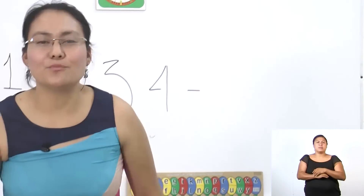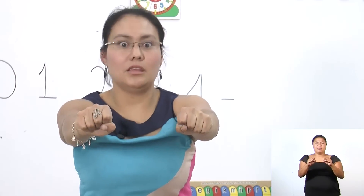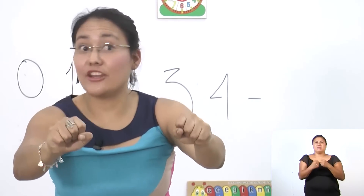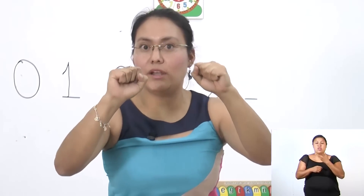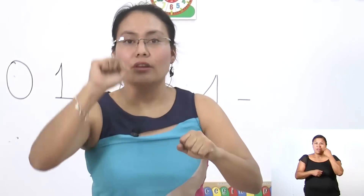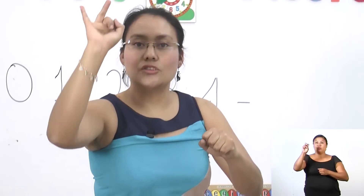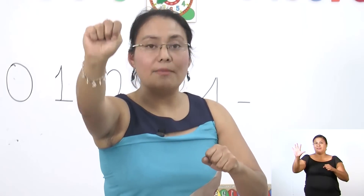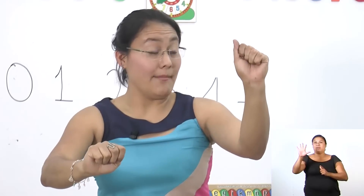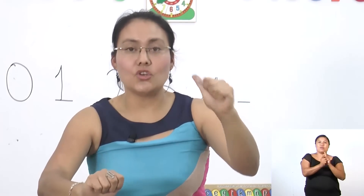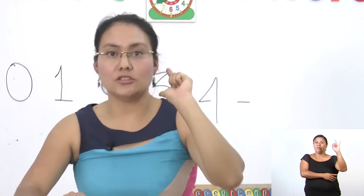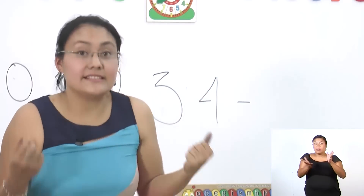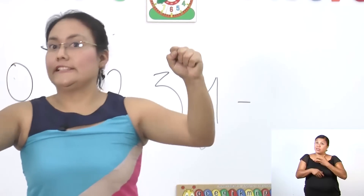Perfecto. Agarré y las puse en mis manos así. Aquí están mis dos colecciones de cinco elementos. Vamos a checarlos: uno, dos, tres, cuatro, cinco. Tengo mi primera colección de cinco elementos. Y en esta otra mano tengo mi otra colección de cinco elementos: uno, dos, tres, cuatro, cinco elementos. Ya lo ves, tengo dos colecciones de cinco elementos.